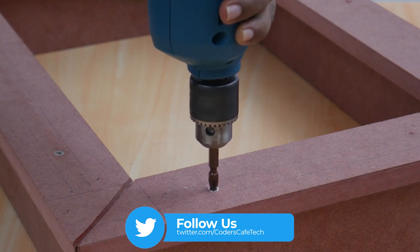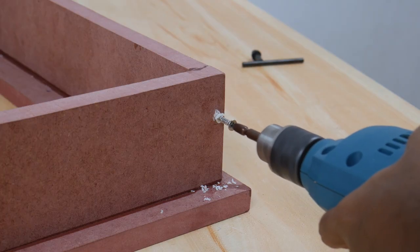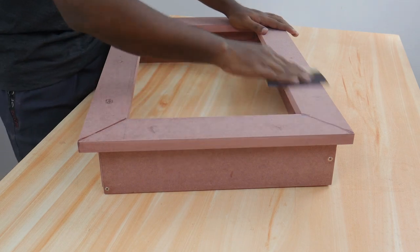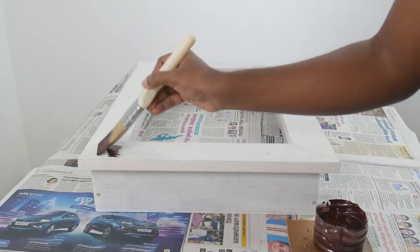We also tighten the back frame using the same screws. After sanding and priming, we stain the frame with dark brown color which can give much more contrast to the wall.